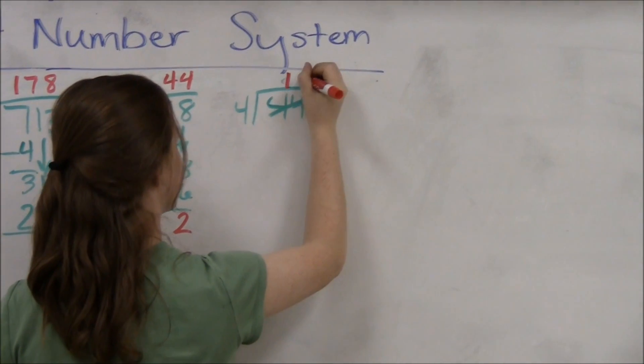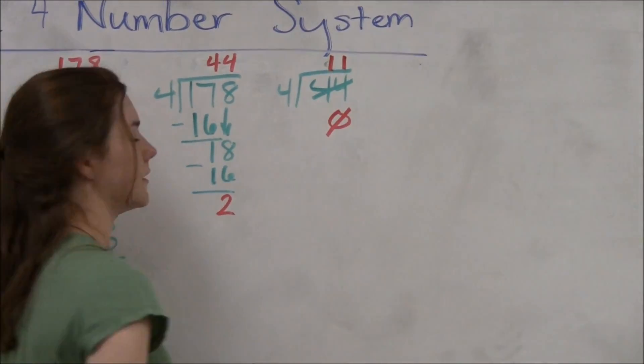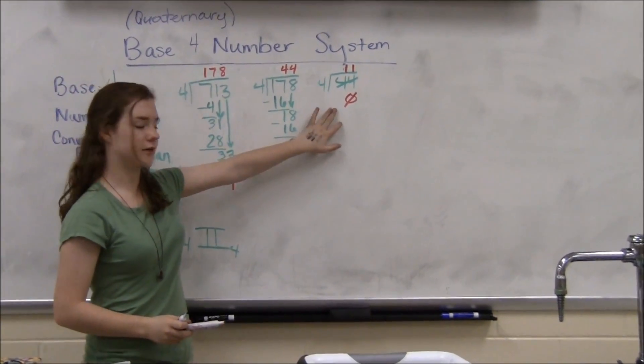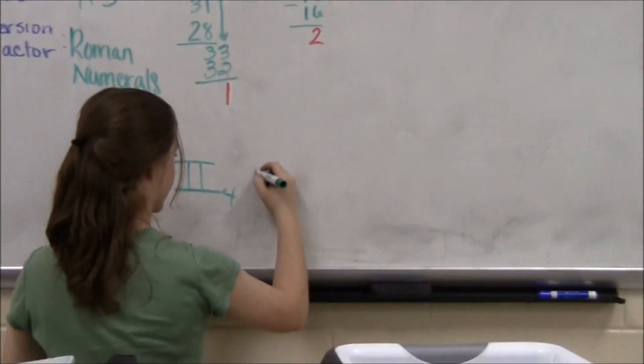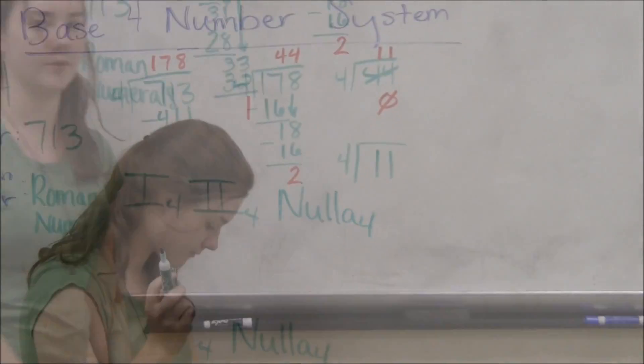That gives us a quotient of 11 and a remainder of 0. Since we have the remainder of 0, like the 2 before, we'll write down here nulla, which is Roman for 0, with a base of 4.